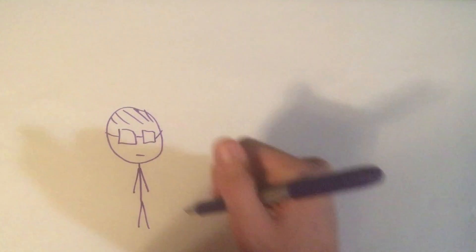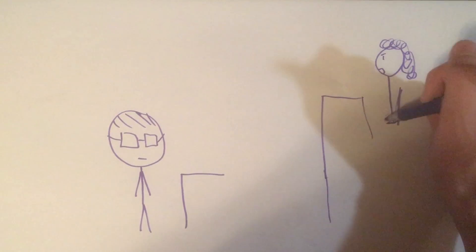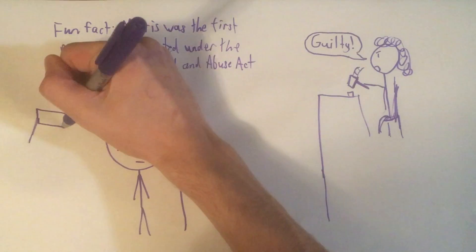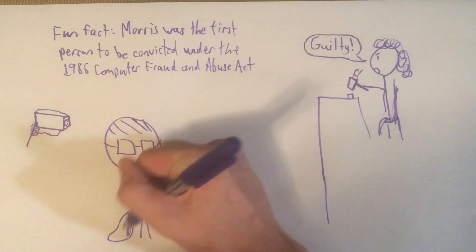So, what happened to Morris? Well, he was convicted of a felony under the 1986 Computer Fraud and Abuse Act, and, as a result, was sentenced to 3 years of probation, 400 hours of community service, and a fine of over $10,000.